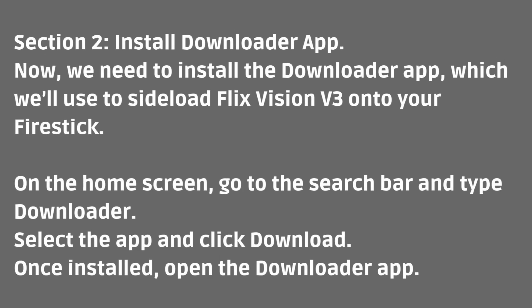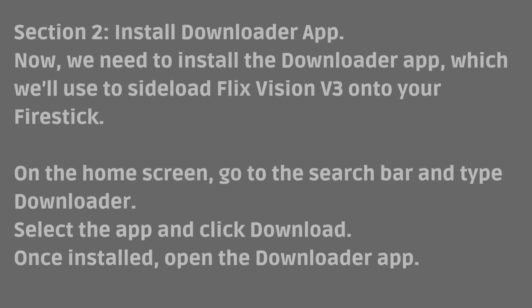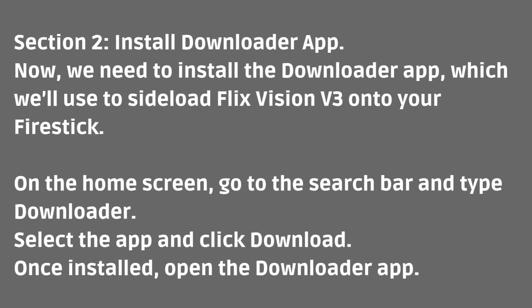Install Downloader App. Now we need to install the Downloader app, which we'll use to sideload FlixVision V onto your Fire Stick. On the home screen, go to the search bar and type Downloader. Select the app and click Download. Once installed, open the Downloader app.